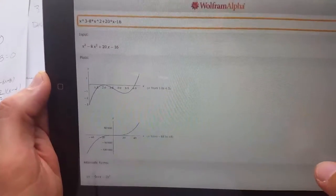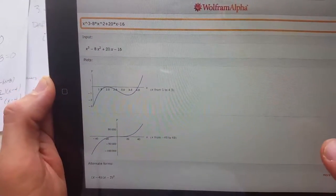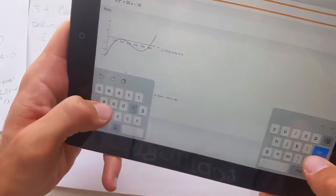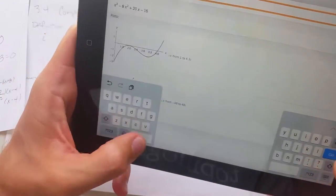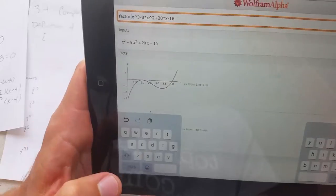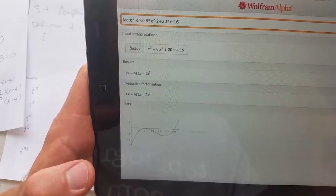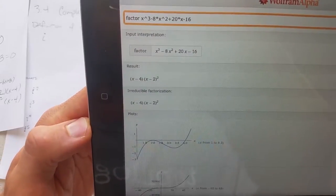So Wolfram Alpha can be very useful. For example, if it didn't give you what you want you can type, for example, factor. So factor, if for some reason it didn't factor the way you wanted you just type factor and hopefully it'll tell you. There you go result right there.